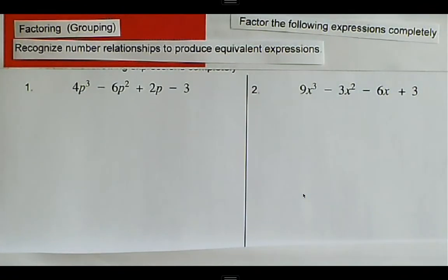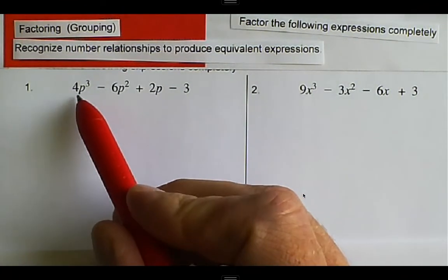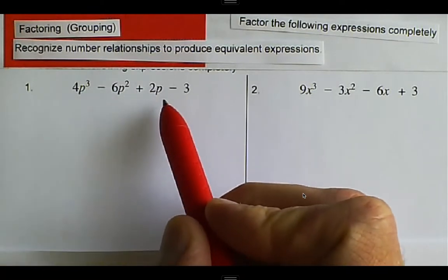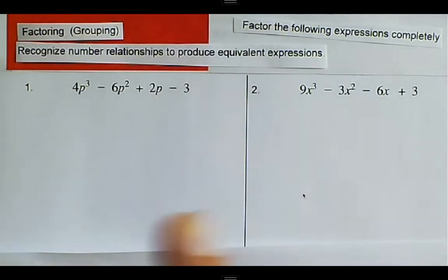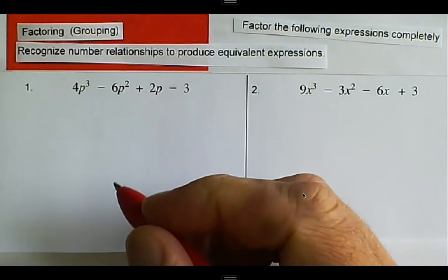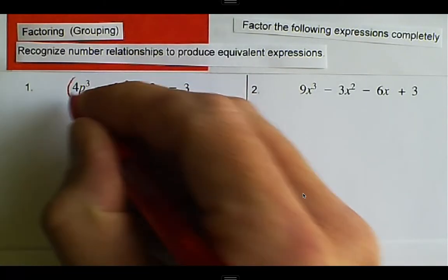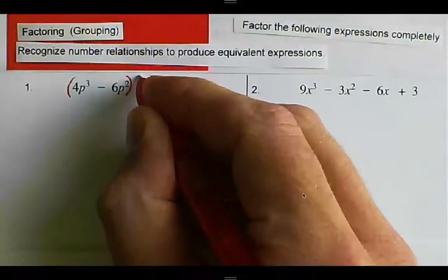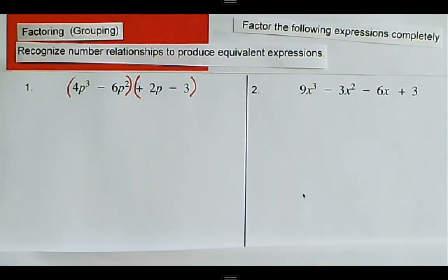First thing we look at is how many terms we have: one, two, three, four. So we have four terms there, and we want to make groups. We're going to make a group of the first two, and we're going to make a group of the last two terms.